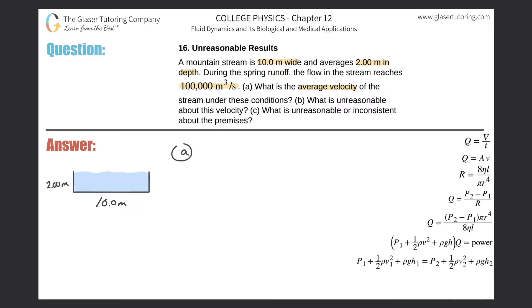We are given a volume flow rate, that is Q. We're told the dimensions of the stream, so that's probably going to tell us the cross-sectional area. We're asked to find the velocity, so fairly straightforward.